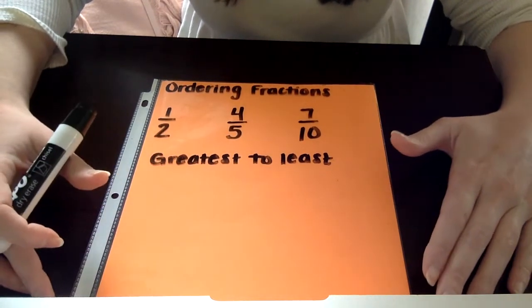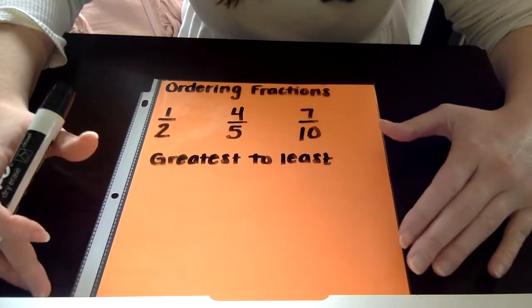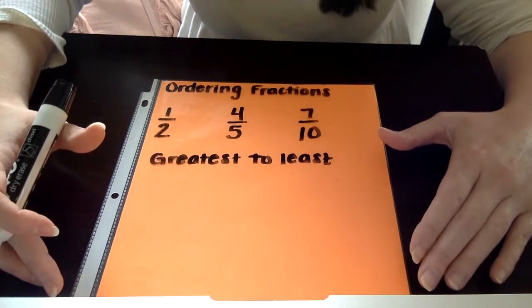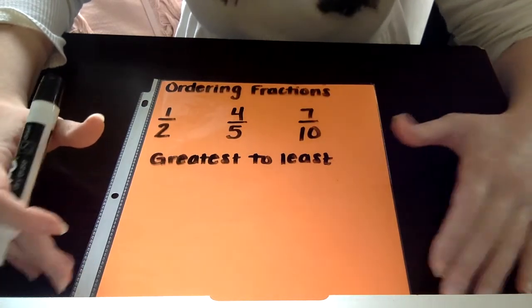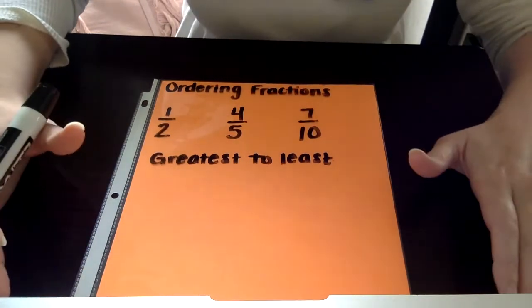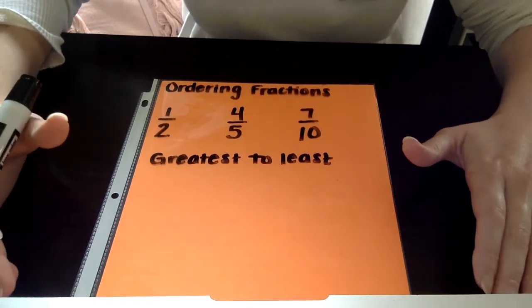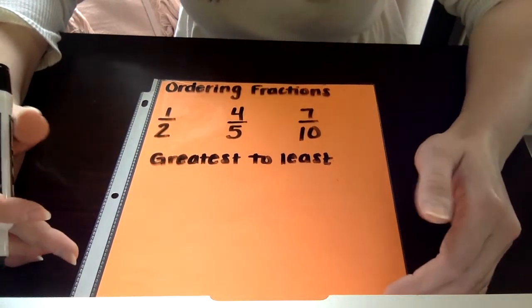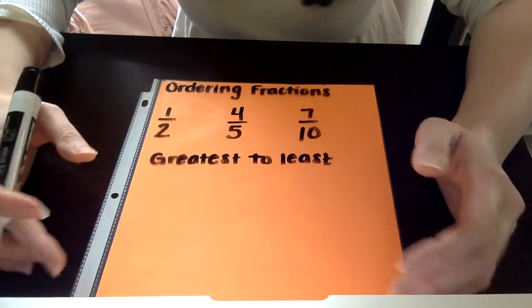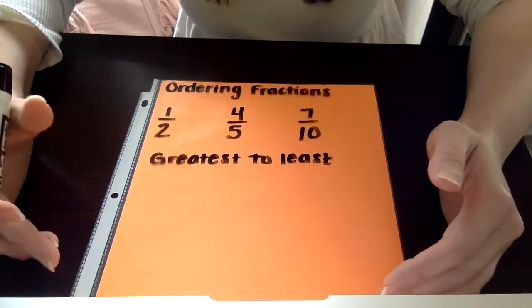One of the easiest ways to do it is to convert all of the denominators so that they're the same. This allows us to just look at the numerators, and we can order it from greatest to least or least to greatest just based off of the numerators alone. So the first thing that we need to do is convert our fractions so that they all have a shared denominator. Converting is just another word for changing the denominators so that they're all the same.